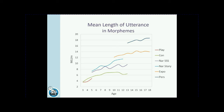This first graph shows mean length of utterance based on data from the SALT reference databases. If you have a 10-year-old, what is typical MLU based on conversation, narrative student select, or narrative story retell? Looking at age 10: MLU is about 7 for conversation; the purple line for narrative student selects bumps up to maybe 8.5 or 9; and the narrative story retell increases to almost 11 MLU in morphemes. So as expected, the higher the language demand — like a persuasive or expository sample — the higher the MLU.